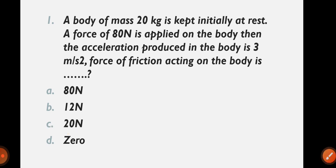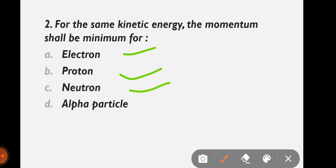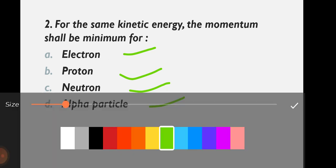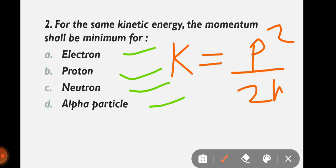I hope you got this question. Now let's move to Question 2: For the same kinetic energy, the momentum shall be minimum for — electron, proton, neutron, or alpha particle? All four have the same kinetic energy, so which one has the least momentum?